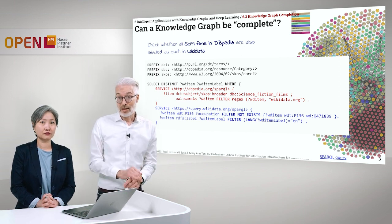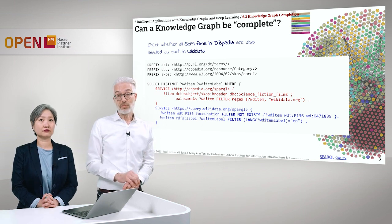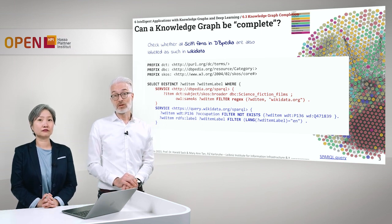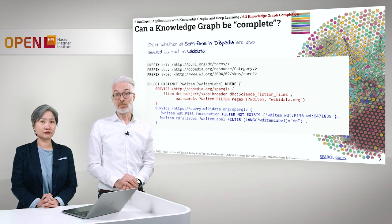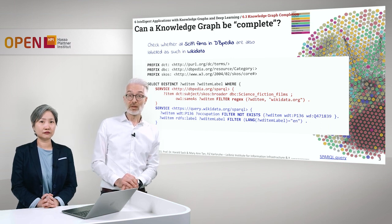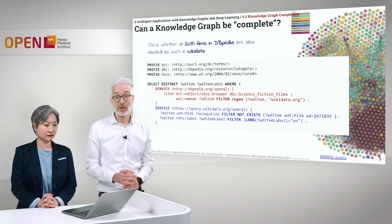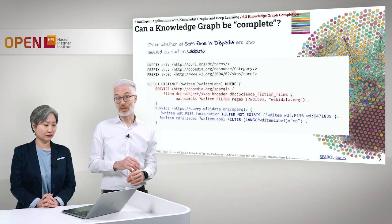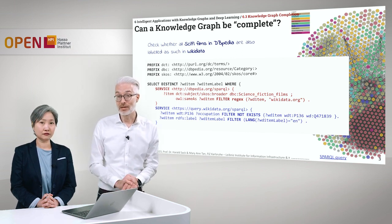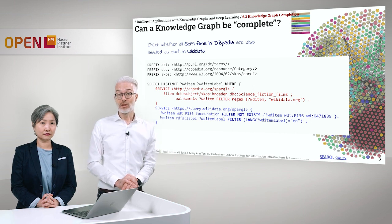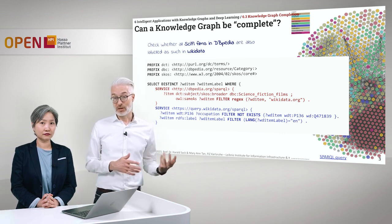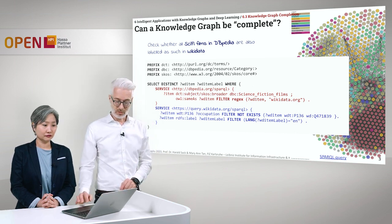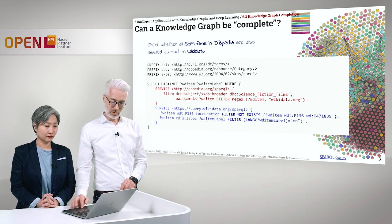Check out DBpedia and Wikipedia — we want to see whether all sci-fi films that are in DBpedia are also labelled as such in Wikidata, meaning whether Wikidata is as complete as DBpedia. We can do this by a simple federated query, which we have learned about previously.